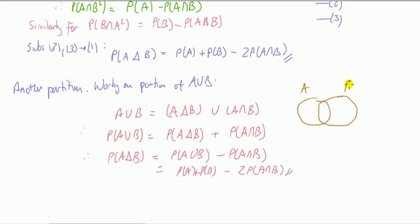So A union B is made up of symmetric difference of A and B, which is this, union A and B. And you can see that they're disjoint, so then on the right hand side they're disjoint.